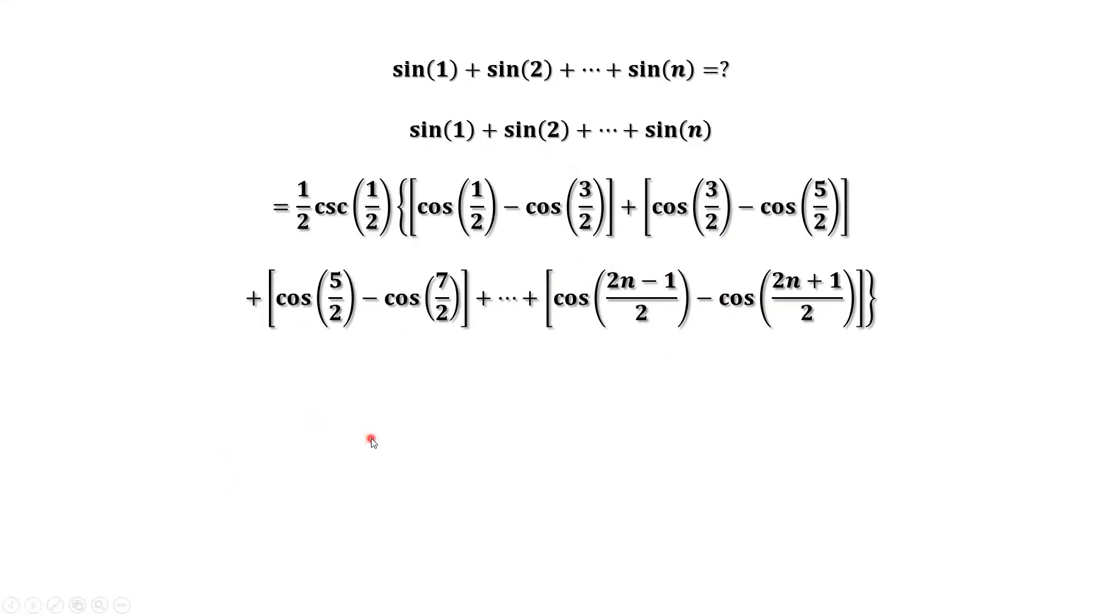What is this? We call it telescopic canceling. What does this mean? Look at the first part and the second part. This one is negative. This one is positive. Both can be cancelled out. And look at this one. Negative cosine of five over two. Positive cosine of five over two are cancelled out.